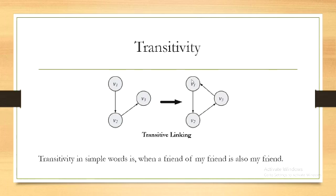Transitivity in simple words means a friend of my friend is also my friend. A transitive behavior needs at least three edges, and these three edges along with the nodes create a triangle. Higher transitivity in a graph results in a denser graph, which is closer to a complete graph. As a social media analyst, if you want to find how dense or connected users are in a social graph, you need to measure transitivity.